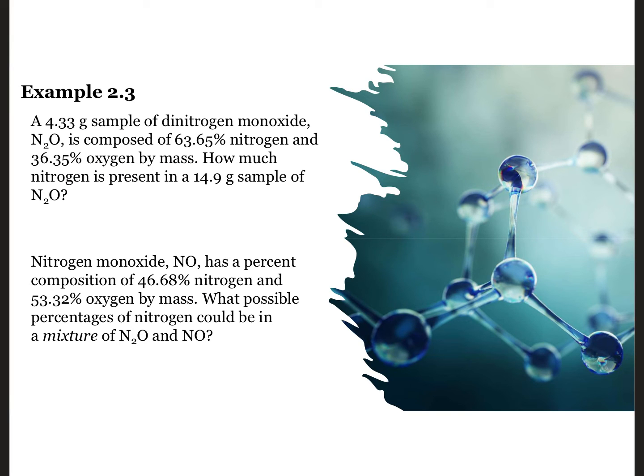A 4.33 gram sample of dinitrogen monoxide, N2O, is composed of 63.65% nitrogen and 36.35% oxygen by mass. How much nitrogen is present in a 14.9 gram sample of N2O? To get the answer, we change the percentage to a decimal and multiply it by the mass to get 9.48 grams nitrogen. What about the next question?